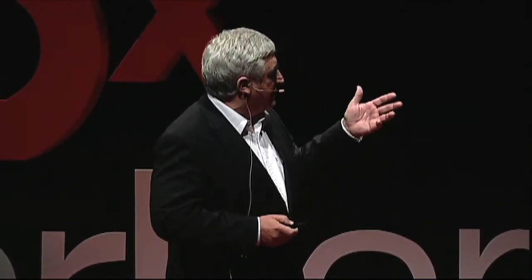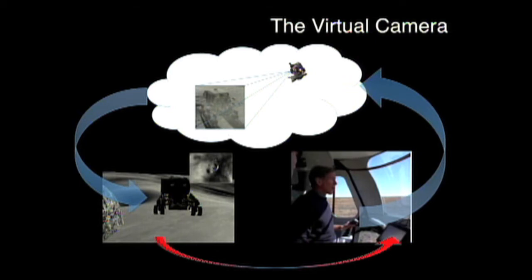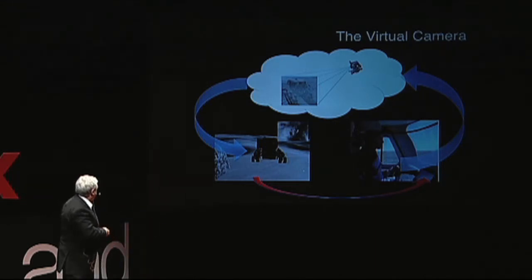We got this idea of designing what we call a virtual camera — a piece of software like Google Earth or Google Moon that you can use to navigate. You can use a joystick and a screen, and move the virtual camera all around — bottom, top, right, left — and show where you are. Of course, this depends on the data that you have, and this is precisely what we are working on right now.